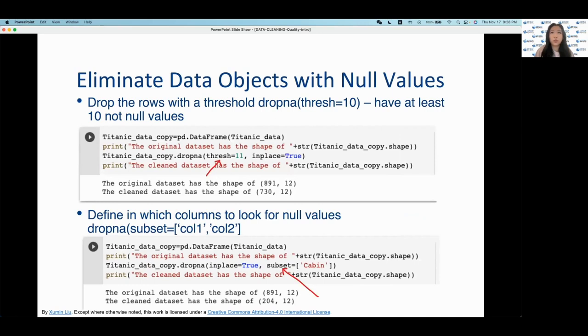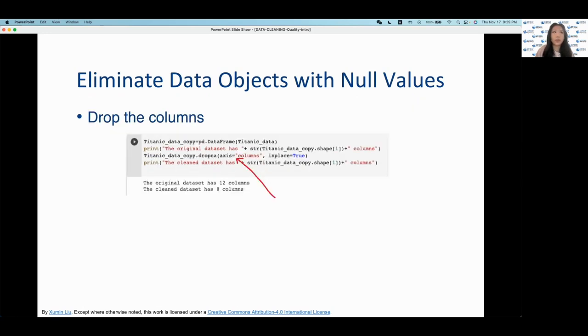Another parameter with the dropna value function is the thresh parameter. And this controls the minimum number of non-nan values needed in the column not to drop. So nan stands for not a number and is one of the ways to represent missing values in data. Another one also is the parameter subset as seen here. And this is for when you want to look at specific columns. And so here you can see that we are just looking at the cabin column specifically. Another parameter also with the dropna function is the axis parameter. And it controls whether it is the rows or the columns that will be dropped. And so you can see here we are specifying we are only looking at the columns.